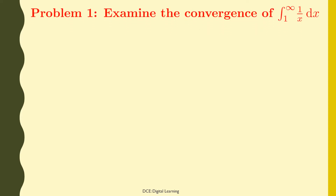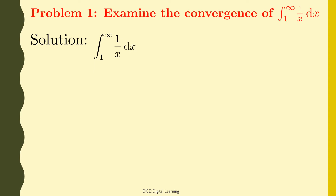Problem 1. Examine the convergence of the integral of 1/x dx from 1 to infinity. Solution. The given integral, integral of 1/x dx from 1 to infinity, is an improper integral of first kind. So by definition, it is equal to the limit of the integral of 1/x dx from 1 to b, as b tends to infinity.